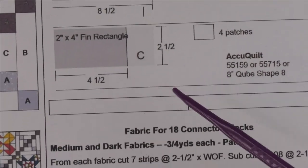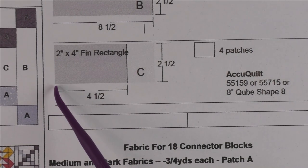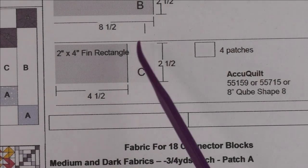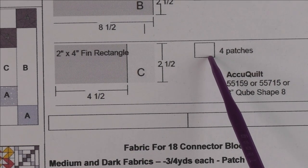Patch C is a two by four inch finished rectangle. We're going to cut it four and a half inches by two and a half inches, and we'll need four patches of the background fabric for this as well.